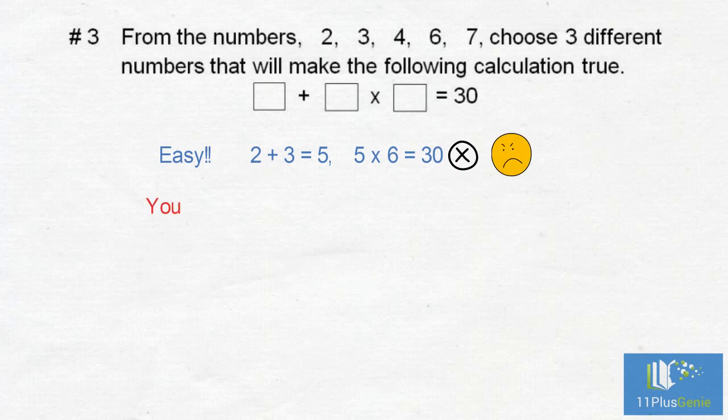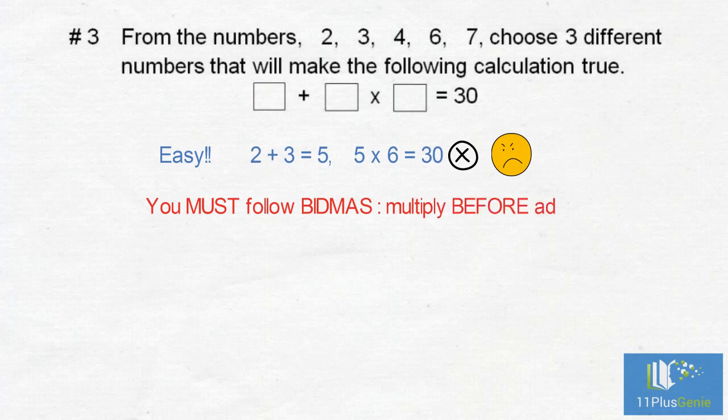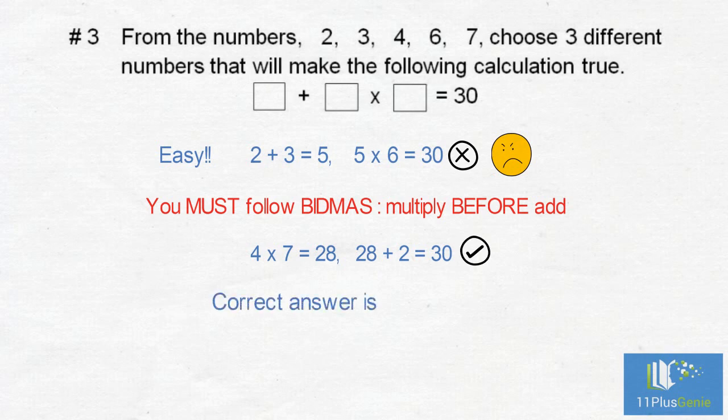You must follow BIDMAS: multiply before add. 4 times 7 equals 28, 28 plus 2 equals 30. So the correct answer is 2 plus 4 times 7 which equals 30.